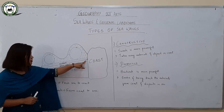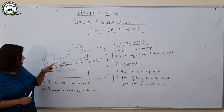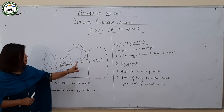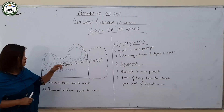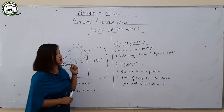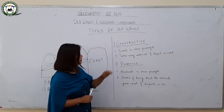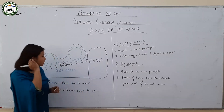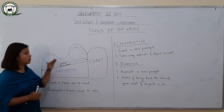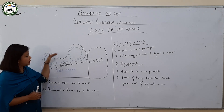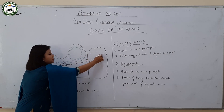The arrow moving from the sea to the coast is the swash, and the arrow pointing from the coast back to the sea is the backwash. Due to swash and backwash, two types of sea waves are created: constructive and destructive. In constructive sea waves, the swash is more powerful — the waves move from the sea towards the coast, bringing materials and depositing them there.